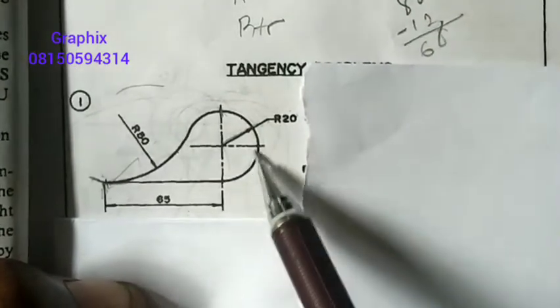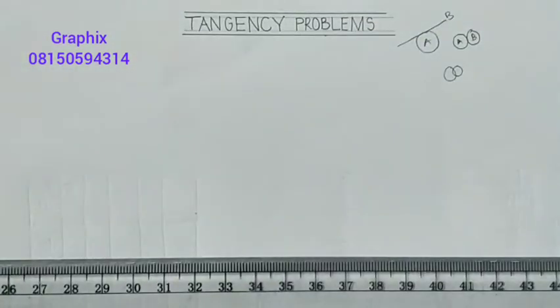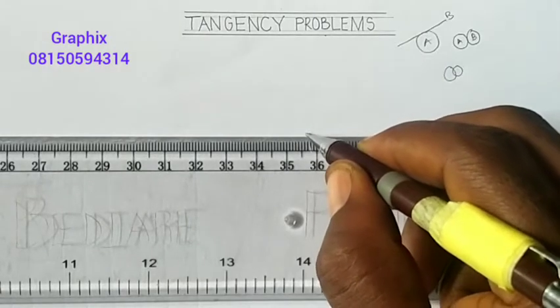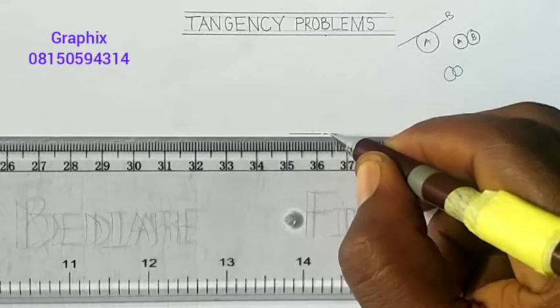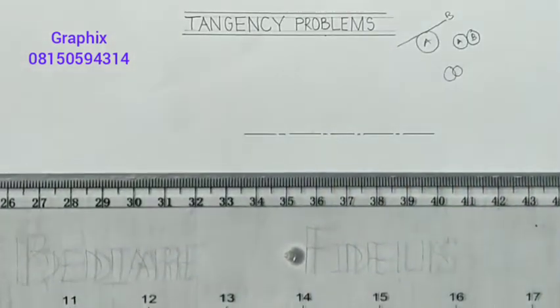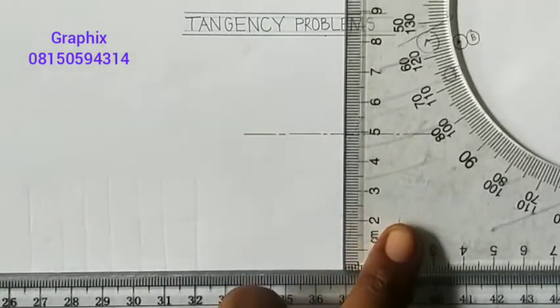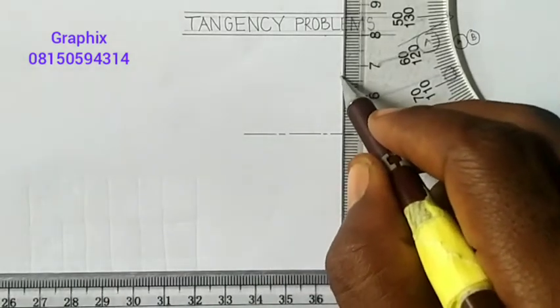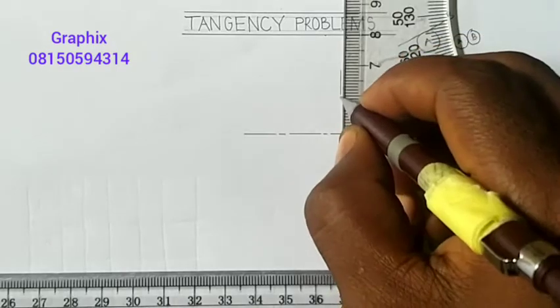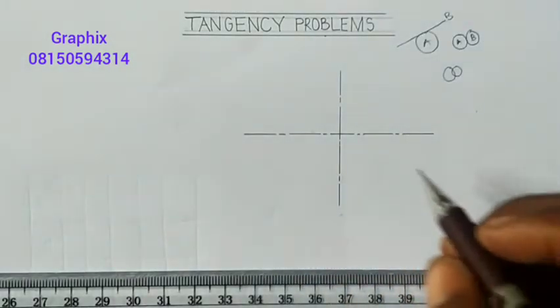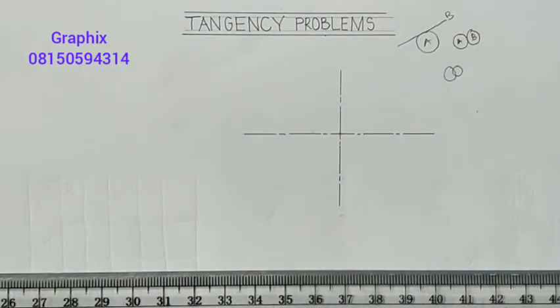So the first thing we'll draw is the circle that has radius 20. Let's start with this. I'll take my compass, my set square, and I'll draw one long center line. After doing that I'm going to take my square and draw another one that is cutting through like this. I have the center of the circle. Remember the radius of the circle is said to be 20 millimeter.